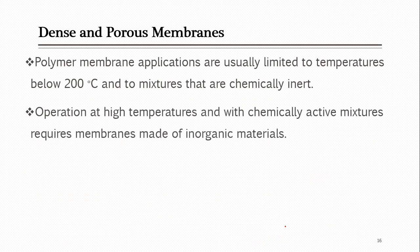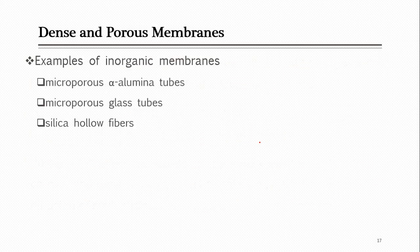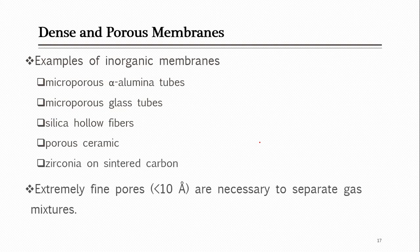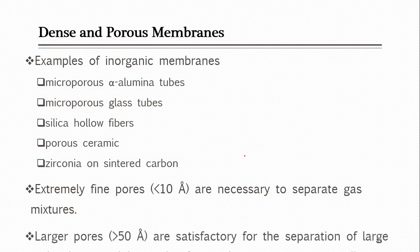Polymeric membranes are applicable for low temperatures up to about 200°C, and should be used where the chemical being separated does not react with the membrane. In cases where temperature is high or there is a chance of reaction between feed and membrane material, you use inorganic materials. Inorganic membrane materials include alumina, glass, ceramic-based membranes, and zirconia.